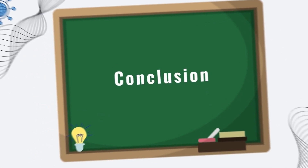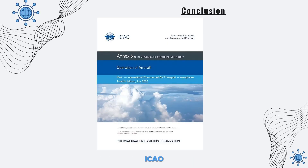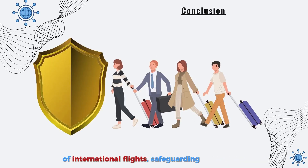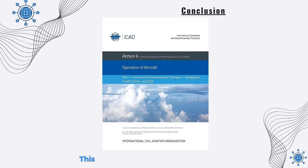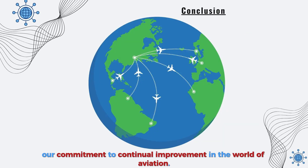By establishing a common safety framework, Aikau Annex 6 plays a vital role in ensuring the smooth and secure operation of international flights, safeguarding passengers, crew, and the public. This vital document continues to evolve, reflecting our commitment to continual improvement in the world of aviation.